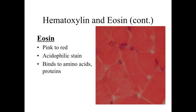The second component is eosin, which produces a pink to red stain. It's referred to as acidophilic and binds to amino acids — so it binds to things with lots of proteins. For example, muscle cells packed with actin and myosin filaments within the cytoplasm will have a very pink staining appearance.